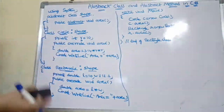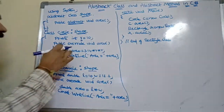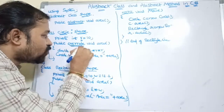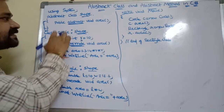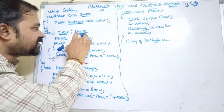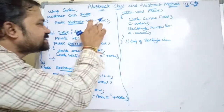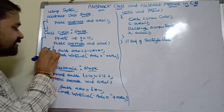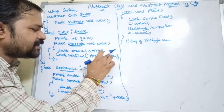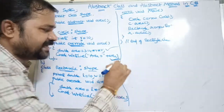Since the Circle class is derived from the Shape class, it needs to provide the definition for the Area method. This derived class method overrides the abstract Area method from the base class, so we use the keyword 'override'. The Circle class contains its own Area method which overrides the base class abstract Area method. The implementation is: double area = 3.14 * r * r, then Console.WriteLine("Area = " + area).